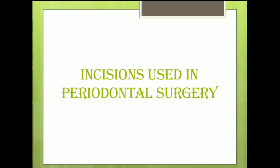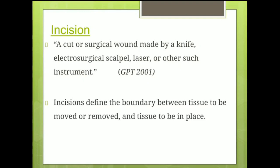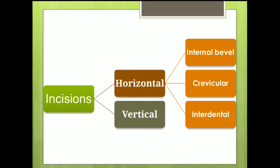Moving on to the incisions used in periodontal surgery. An incision by definition is a cut or surgical wound made by a knife, electrosurgical scalpel, laser, or other such instrument. It defines the boundary between the tissue to be moved or removed and the tissue to be left in place. The incisions used in periodontal surgery can be classified as horizontal incisions, which are given almost parallel to the gingival margin, and vertical incisions, which are given parallel to the long axis of the tooth. Horizontal incisions can be further subclassified into internal bevel, crevicular, and interdental incisions.